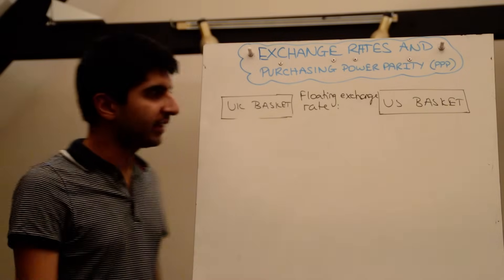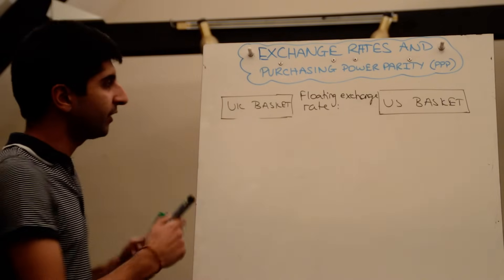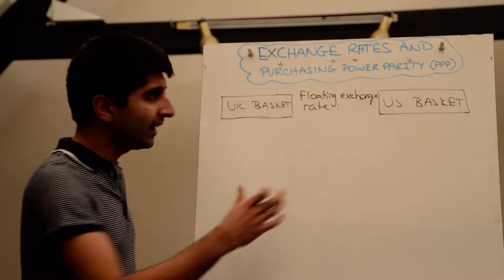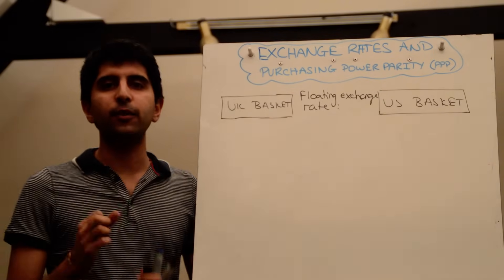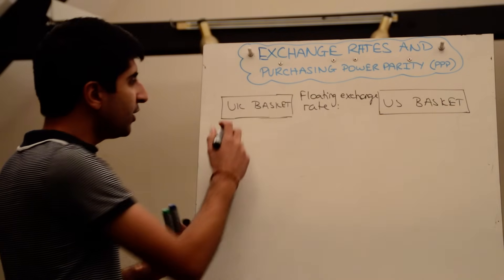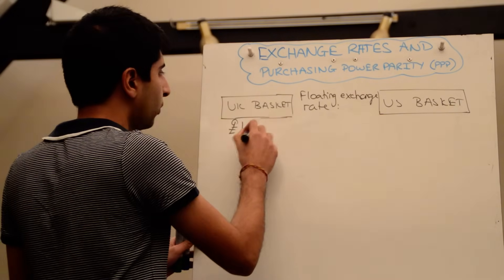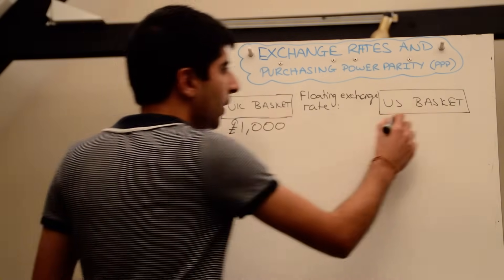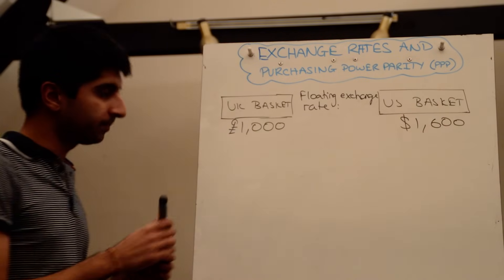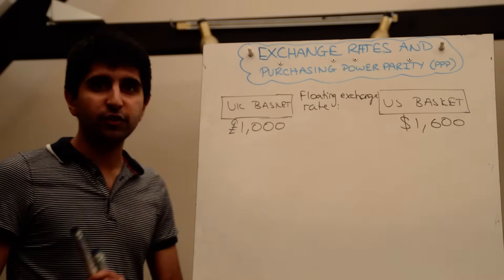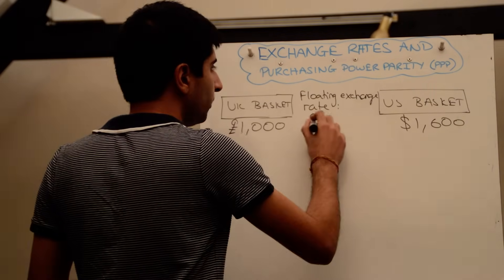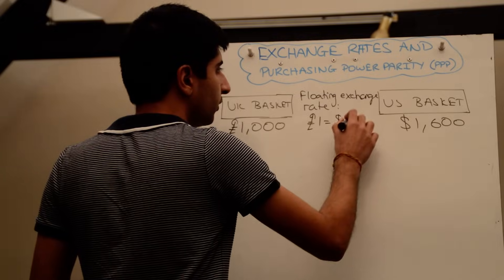Let's take an example to understand. Let's take a UK basket of goods and services and a US basket of goods and services, and let's say exactly the same goods and services are accounted for in the two baskets. Let's say in the UK the value of this basket came to £1,000 and in the US the value came to $1,600. Let's say the floating exchange rate between the two countries was £1 equals $1.60.